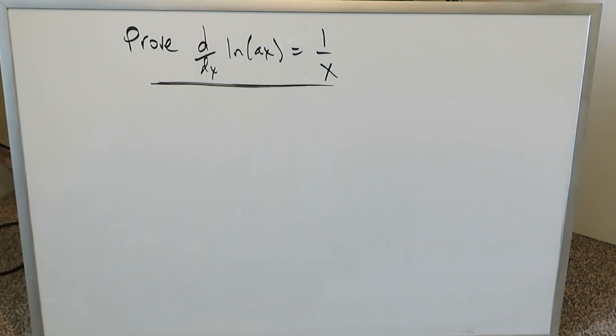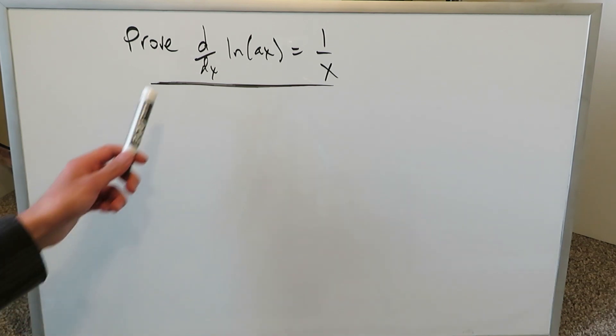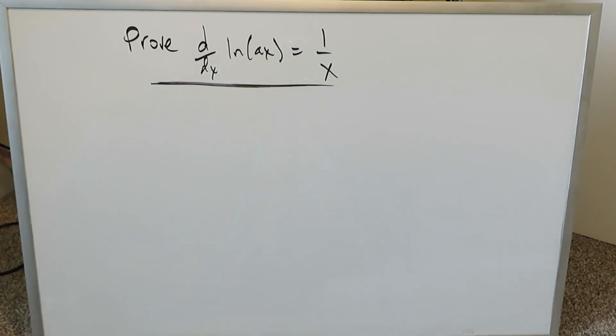You know we've looked at something like this a long time ago. Anytime you have a derivative of natural log ax where a can represent a coefficient, it always turns out as 1 over x in terms of the derivative.